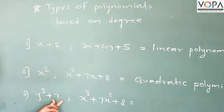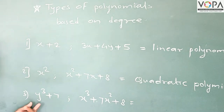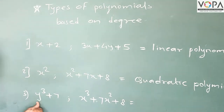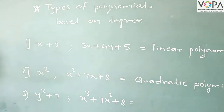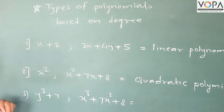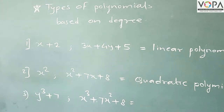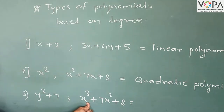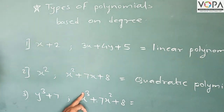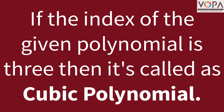Next example: y³ plus 7. Here there are two terms, and the index of y is 3. Therefore if the index is 3, it is called a cubic polynomial. In the second example also, there are 3 terms but the highest index is 3. Therefore it is called a cubic polynomial.